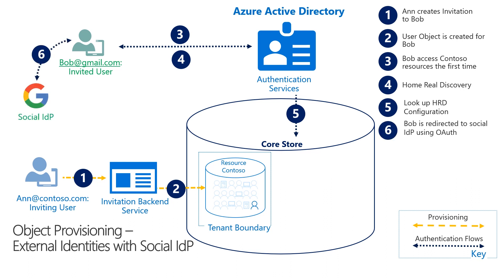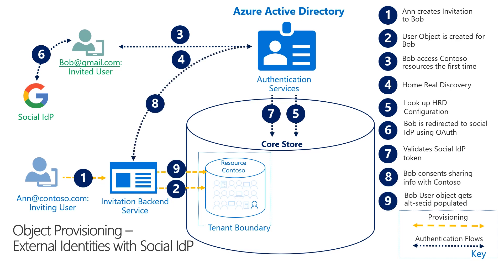In step six, Bob interacts with the social IDP through OAuth and sends a token back to authentication services. In step seven, the social IDP token is validated. After validation, steps eight and nine are exactly the same as before.